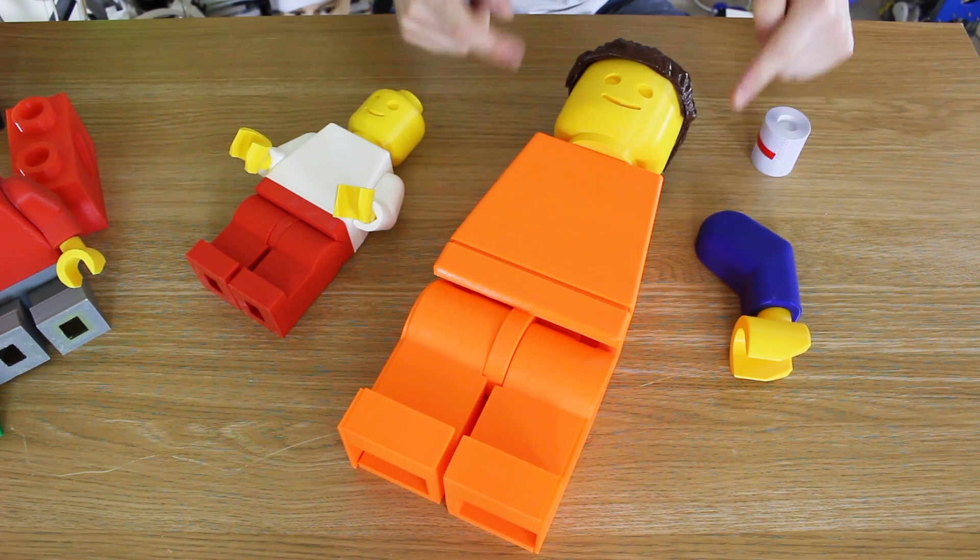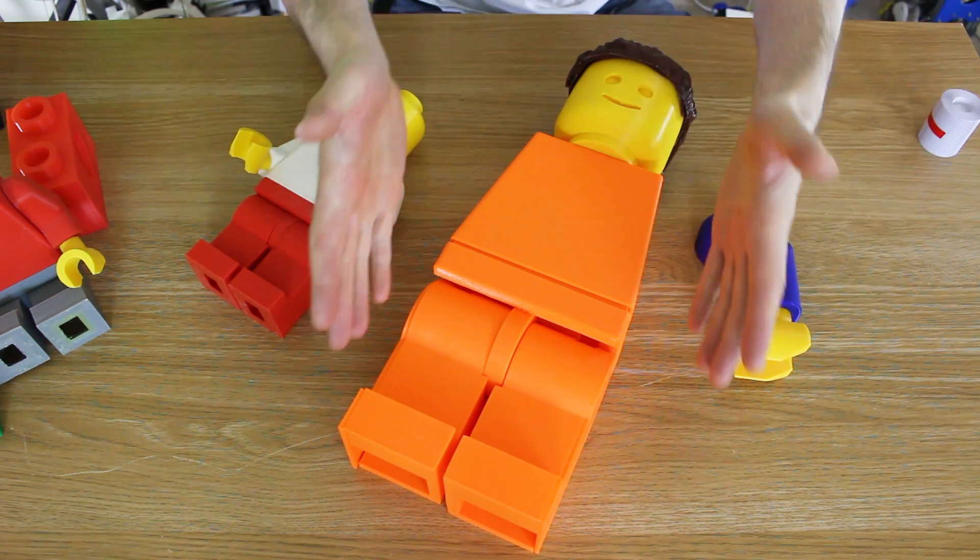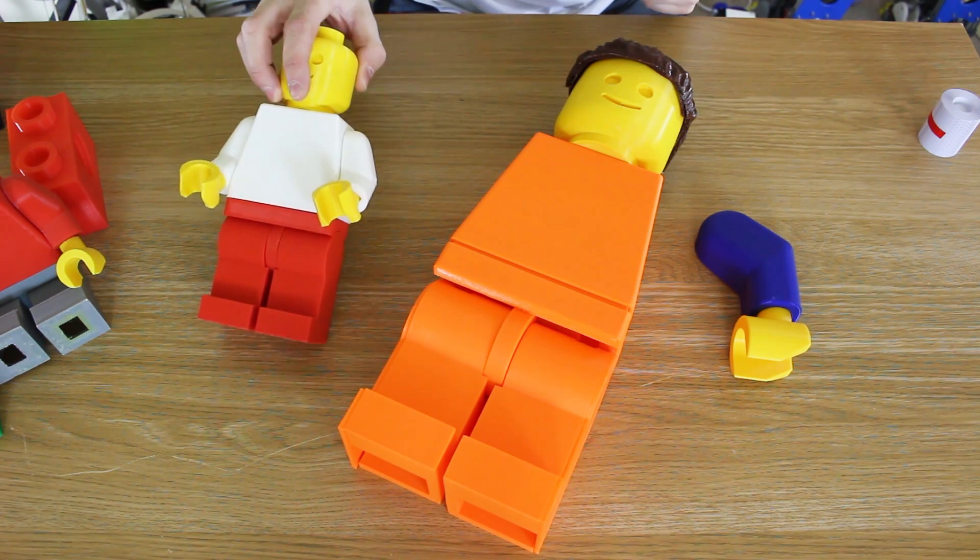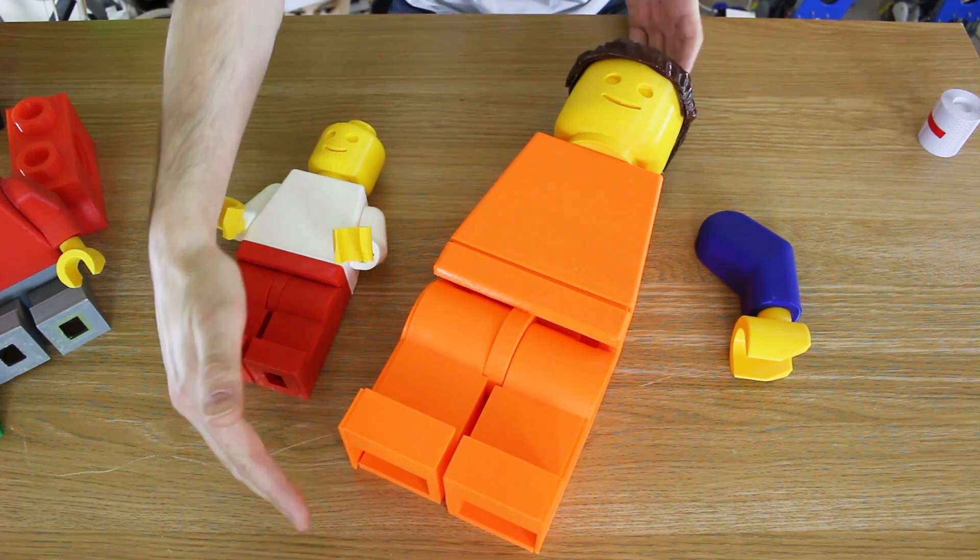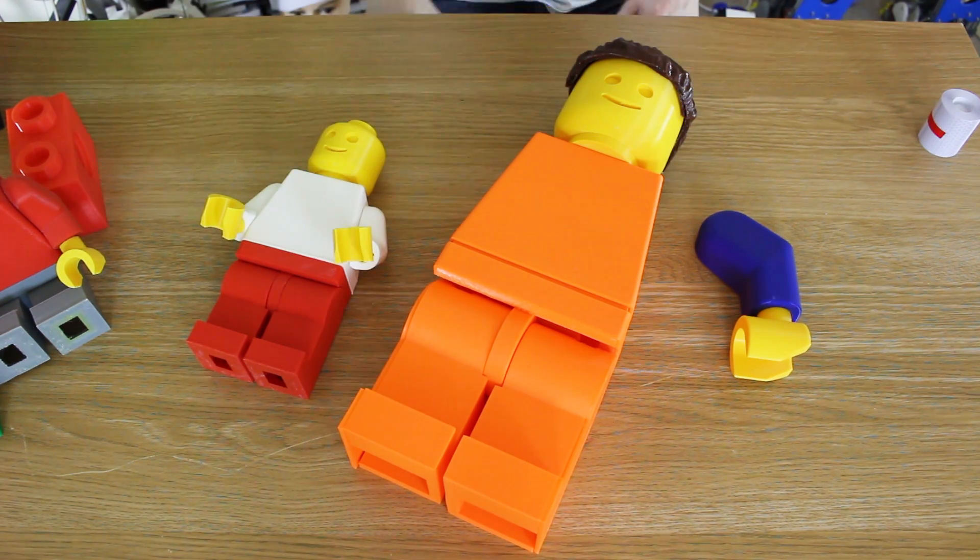This one's going to be based off Emmett Brickowski from the LEGO movie. We've even got high-vis tape to stick on him. Now this LEGO minifig is absolutely massive. This one is seven times bigger than a normal minifig. It's about 40 centimeters or 16 inches tall.